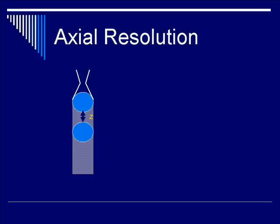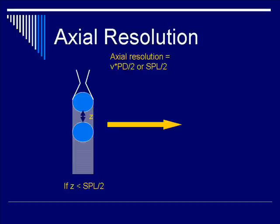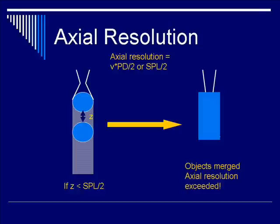Now, suppose the same two point reflectors are moved closer together such that spacing Z is less than the spatial pulse length divided by 2. In this instance, the two point reflectors cannot be resolved in the axial resolution direction. As a result, they merge into one line — the objects are merged, and axial resolution is exceeded.